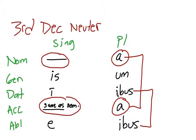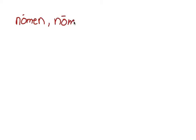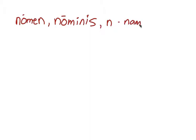I'm going to give you at least one example of a third declension neuter noun — there are actually two in this chapter. Our model noun is going to be nomin. Of course, nomin means 'name,' so it's nomin, nominus. Just like with some third declension masculine nouns, the e changes to an i in the genitive — that's really important. So: nomin, nominus, neuter, 'name.'